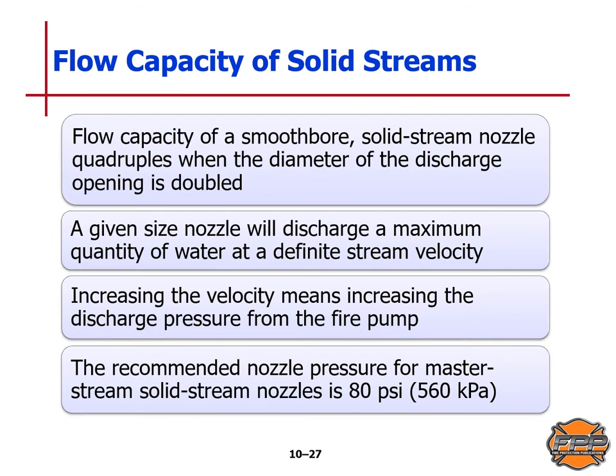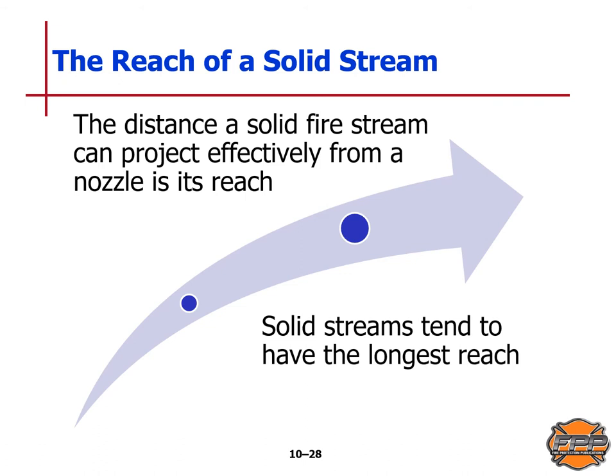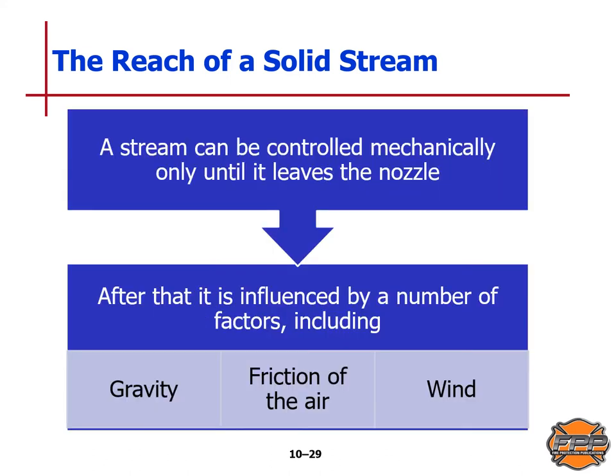The flow capacity of a smoothbore solid stream nozzle quadruples when the diameter of the discharge opening is doubled. A given size nozzle will discharge a maximum quantity of water at a definite stream velocity. Increasing the velocity means increasing the discharge pressure from the fire pump. The recommended nozzle pressure for a master stream solid stream nozzle is 80 psi or 560 kilopascals. The distance a solid fire stream can project effectively from a nozzle is its reach, and solid streams tend to have the longest reach. Once a stream leaves the nozzle, it is influenced by gravity, friction of the air, and wind.